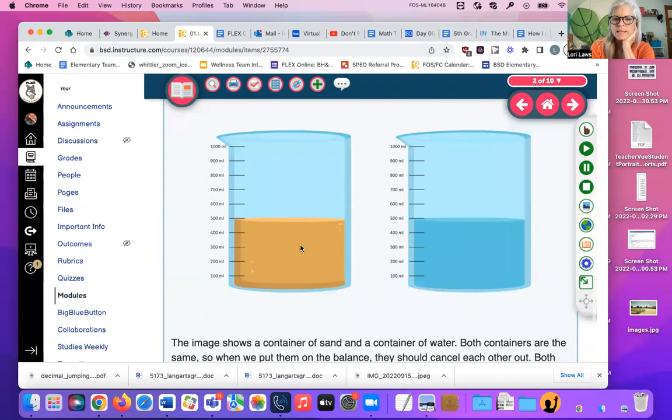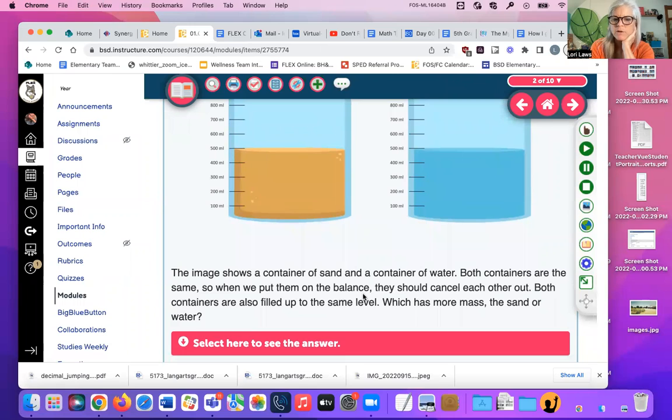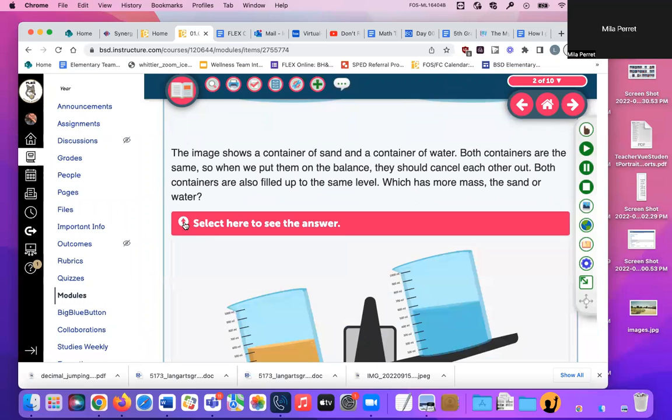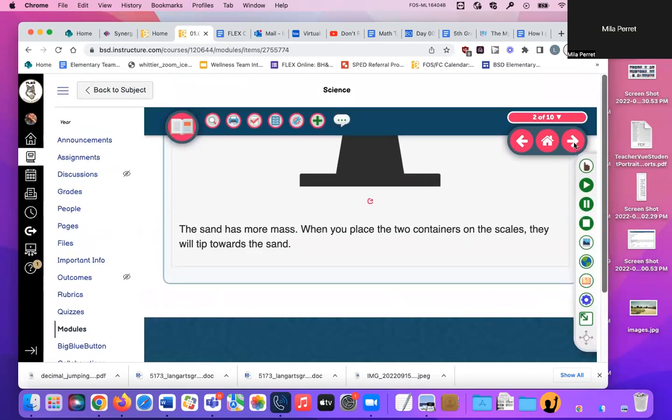The image shows a container of sand and a container of water. Both containers are the same, so when we put them on the balance, they should cancel each other out. Both containers are filled up to the same level. Which has more mass, the sand or the water? What do you guys think? Just say it. Go ahead and talk. The sand. Did you guys cheat? Look, the sand has way more mass. You place two containers on the scales, they'll tip toward the sand. And what I like to think about is like, what if you had a container of styrofoam or feathers and you have the same size container of rocks? Which is going to weigh more? The feathers or the rocks? Rocks. Yeah, right? It has way more mass.